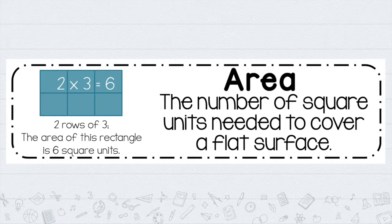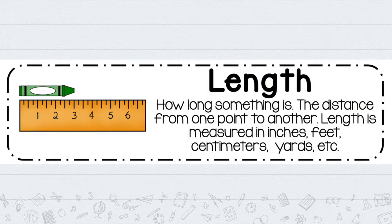Sometimes you're going to have a picture that has all the square units tiled right in front of you, but most of the time you are going to have to multiply yourself. You have to multiply two numbers only. The first is the length — that's how long something is, the distance between one point and another. The most popular units here in the United States are inches, feet, centimeters, yards, and so on. Remember, the word 'length' starts with the letter L, and the word 'long' also starts with L — so length is how long something is.